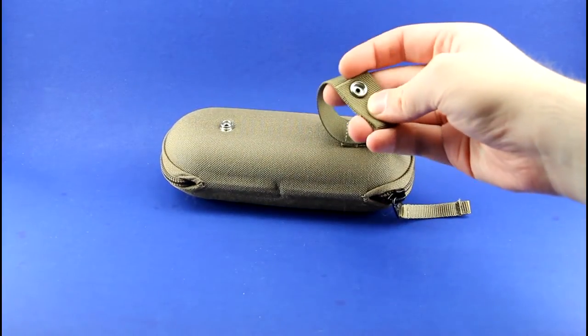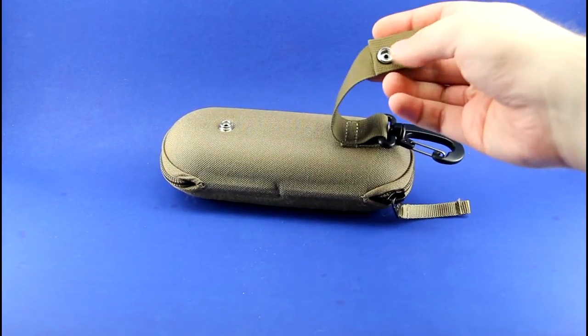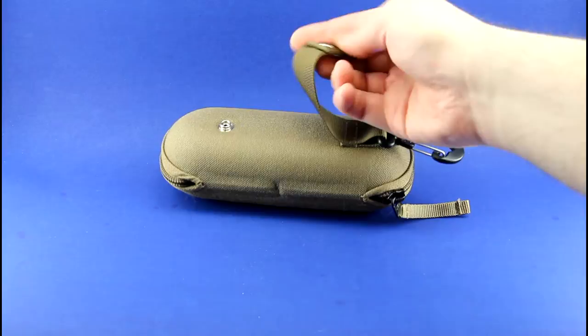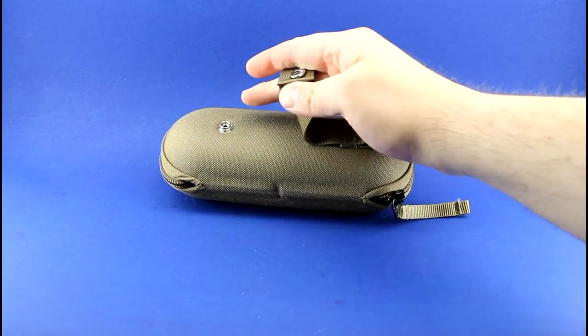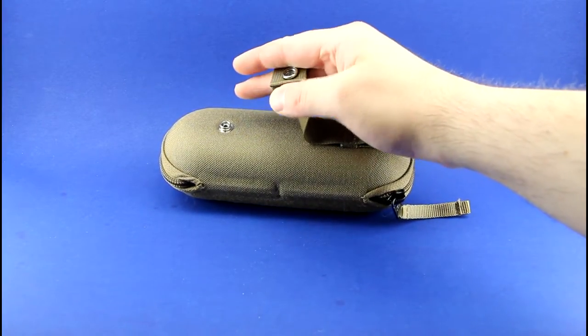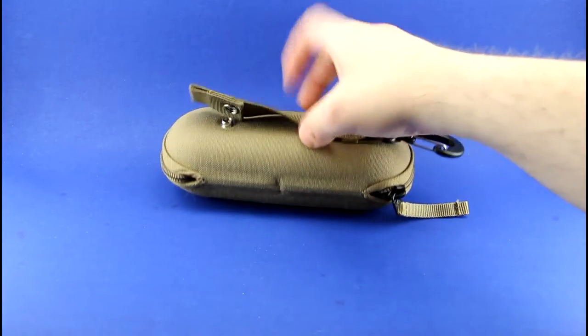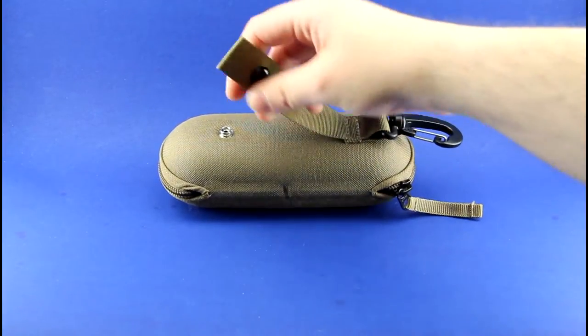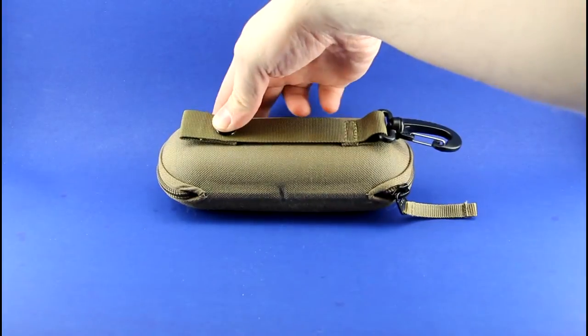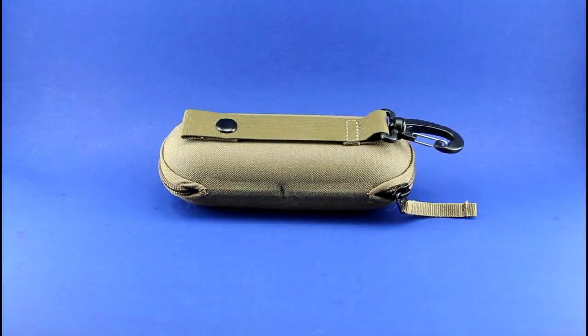However, that will not detach the sunglass case from your bag, because it has this little lip under here, which will catch onto your webbing if the snap comes undone. So you'll just have the pod flapping about, and you can re-secure the snap later.